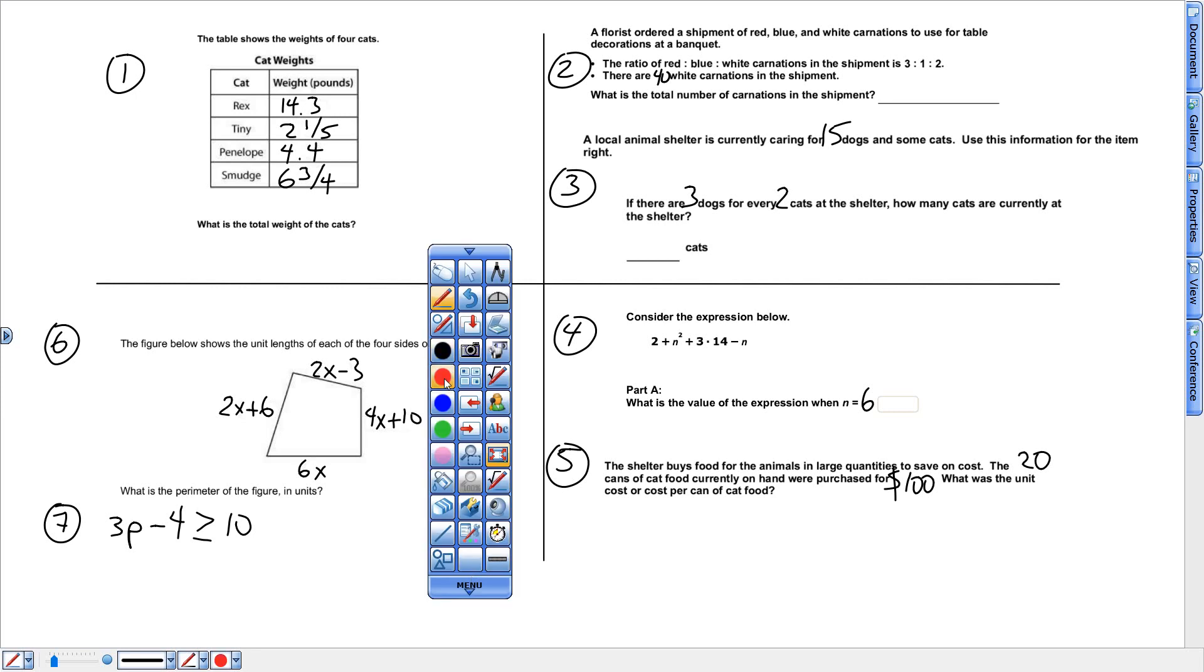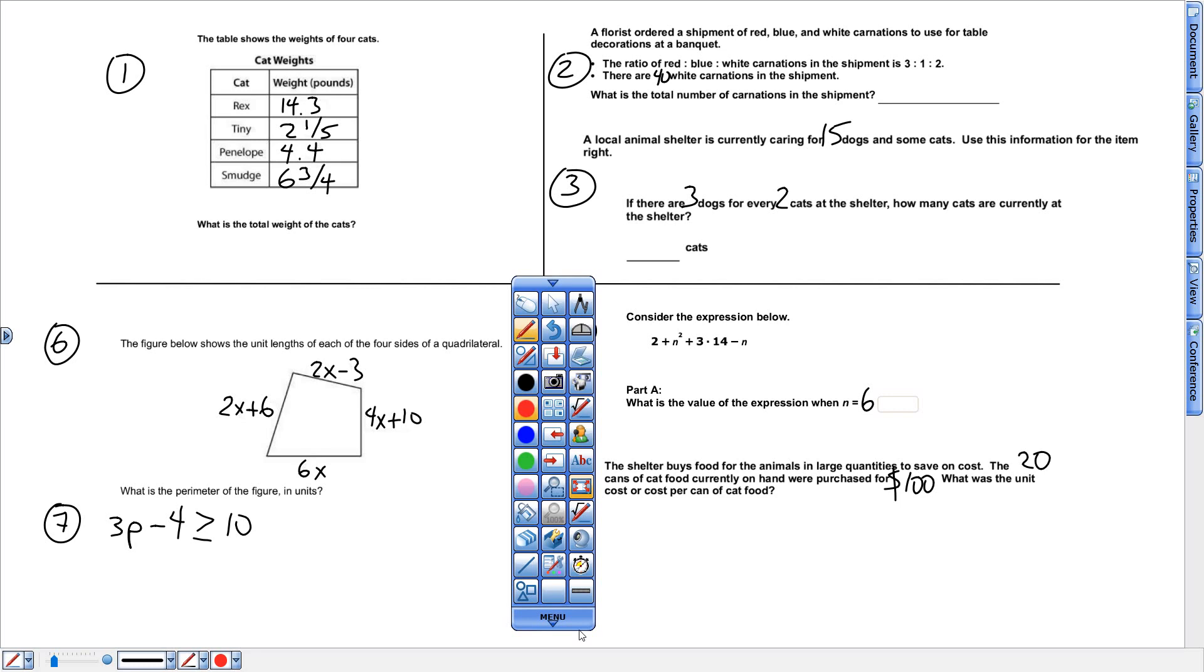The first word is blue. So 14.3 stays the same. Two and one-fifth becomes 2.2. Know how to use a calculator to change a fraction to a decimal. That becomes 2.2. Four points, so four stays the same. Six and three-fourths is 6.75. Know how to use that ABC button to get fractions and then know how to use that PRB button to get fractions to decimals.